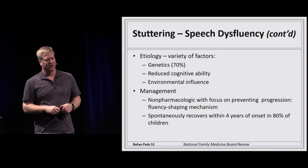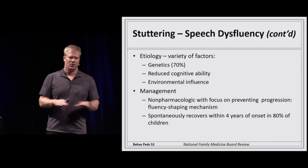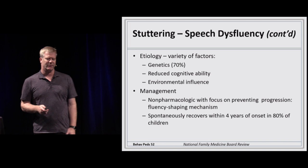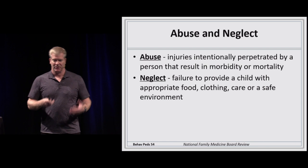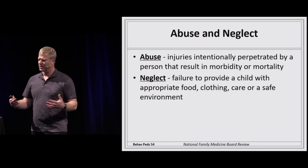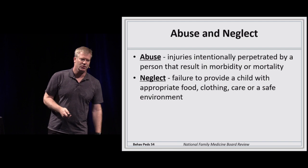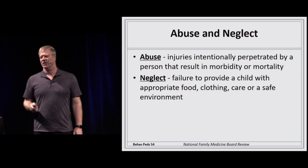Concerning injury patterns include: spiral fractures in non-walking children, any rib or skull fractures, injuries shaped like objects such as belt buckles or cigarette burns, and multiple injuries at different stages of healing. The speaker recounts a personal case of a child with multiple fractures who was reported to child protective services and ultimately diagnosed with osteogenesis imperfecta — a reminder to also consider underlying conditions.